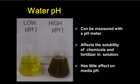With water pH, there are three important factors. One is it's very easy to measure with a pH meter. Secondly, it affects the chemical solubility of fertilizers and fungicides and other things in the solution. For example, in the picture, you have two solutions that contain iron sulfate. The one on the left is at a low pH — the solution is clear, you can see through it, and it's yellow. The one on the right is the same iron sulfate solution, but the pH is high. The iron sulfate has precipitated out and is no longer available to the plant. So pH has a very big effect on solubility.